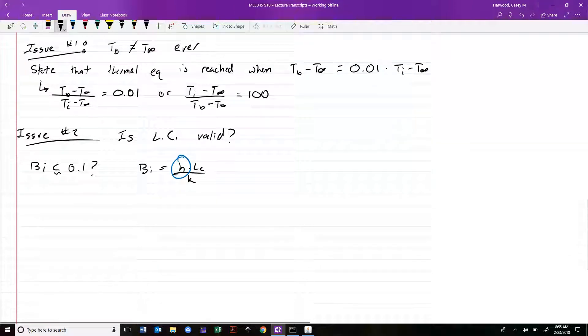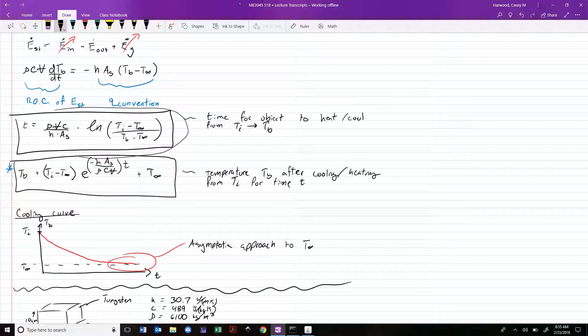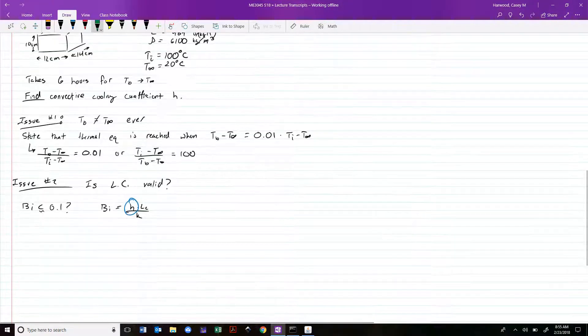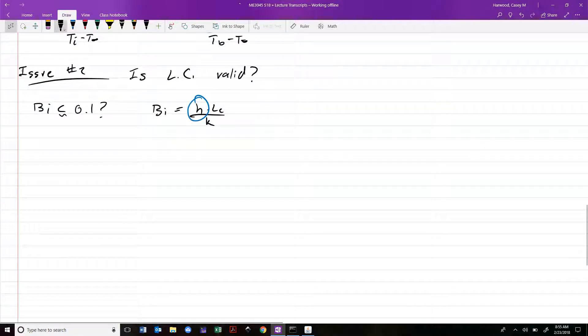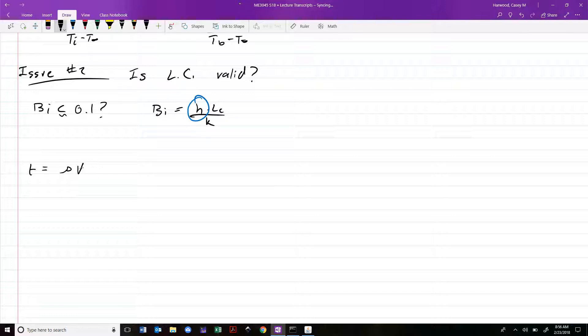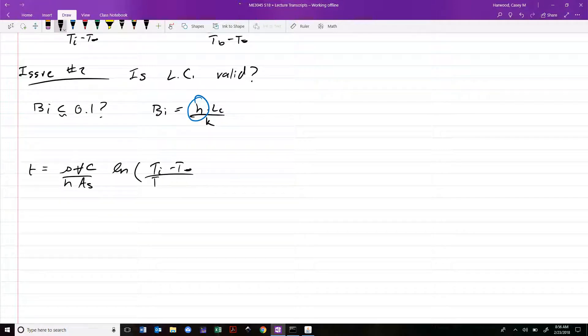We're going to use this version of our solution. We know T. We know everything except for H. The idea is we're just going to be plugging in values and solving for H. We have T equal to rho Vc over H times As times ln of Ti minus T infinity over Tb minus T infinity. We can solve for H as being equal to rho Vc over As, one over T times that same natural log.